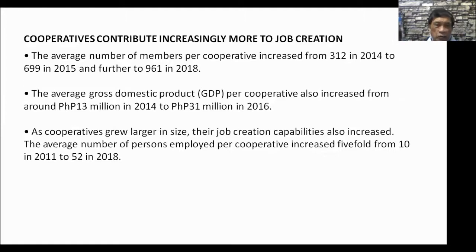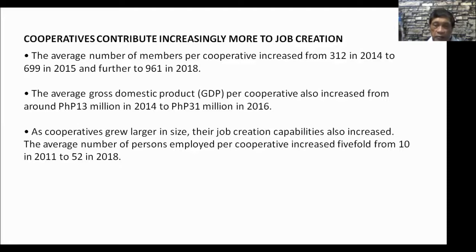Cooperatives have been known to contribute increasingly to job creation. The average number of members per cooperative increased from 312 in 2014 to 699 in 2016 and further to 961 in 2018 — they have become larger. The average gross domestic product per cooperative also increased from 13 million in 2014 to 31 million in 2016. The average number of persons employed per cooperative increased fivefold, from 10 in 2011 to 52 in 2018.